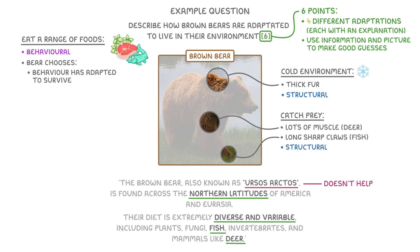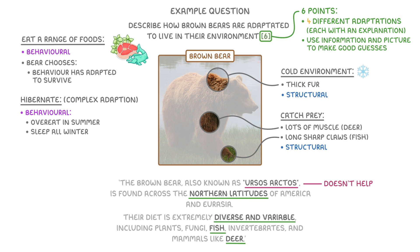You could also use your own knowledge of bears. For example, you might know that bears hibernate, which is actually a slightly more complicated adaptation. In one sense, this is a behavioural adaptation, because the bears overeat in the summer when there's lots of food about, and then just lie down in a den and sleep all winter when it's cold and there's no food — which are both behaviours. But it's also a functional adaptation, because their bodies lower their metabolisms right down when they hibernate, so that they conserve as much energy as possible. In a real exam, you wouldn't need to write this much, as we've done about 12 marks worth of stuff here. But hopefully this gives you a better idea of what adaptations are.